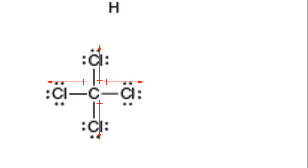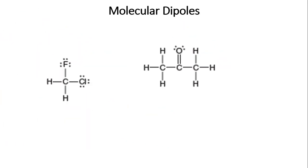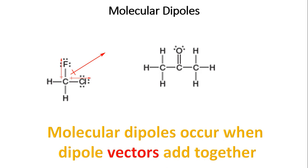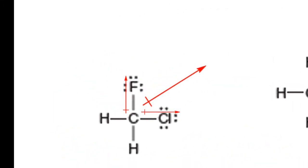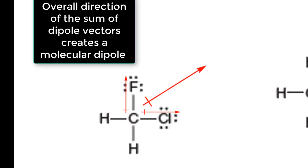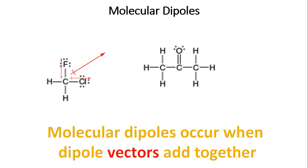Individual atomic dipoles are always present when one atom is more electronegative than the other. Because a dipole is a vector — it has magnitude and direction — those individual dipoles can add together. Summing the fluorine and chlorine dipoles, for example, gives a net direction of electron flow in the molecule. This net direction is called the net dipole or molecular dipole.